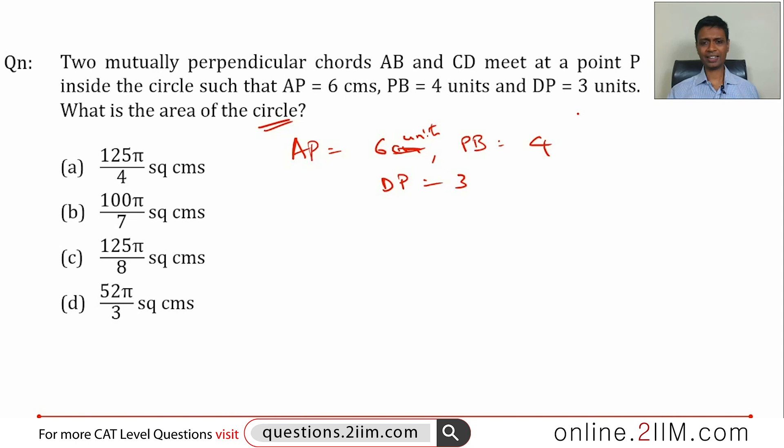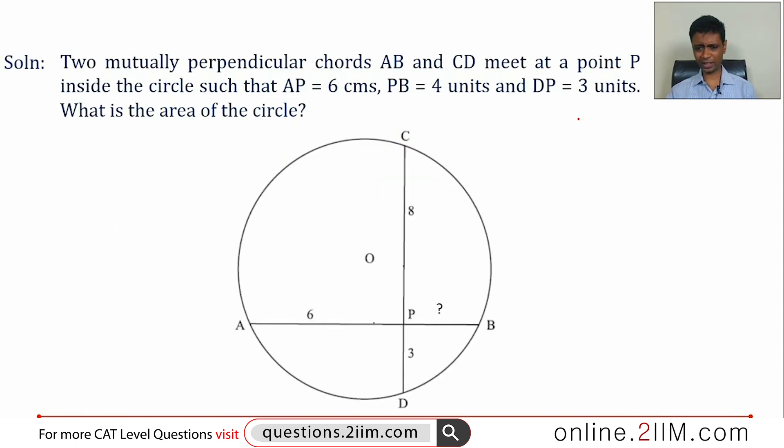They are perpendicular to each other. Let's draw the diagram - two chords that are perpendicular to each other, this is 90 degrees. This is 8 and 3, this is 6. To start with, what will be PB?